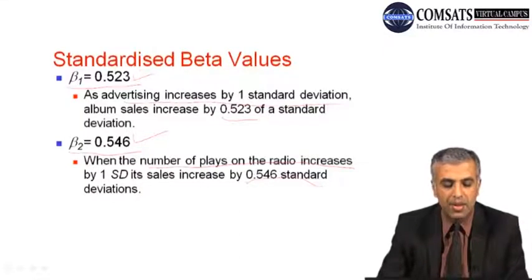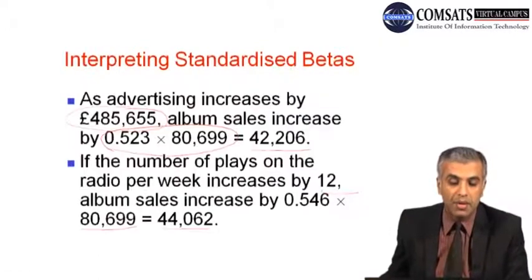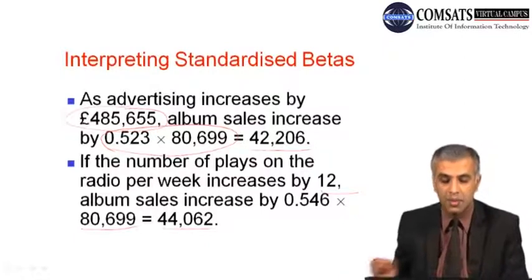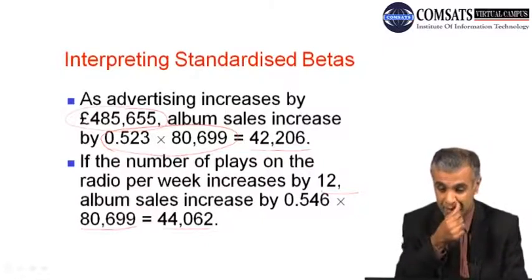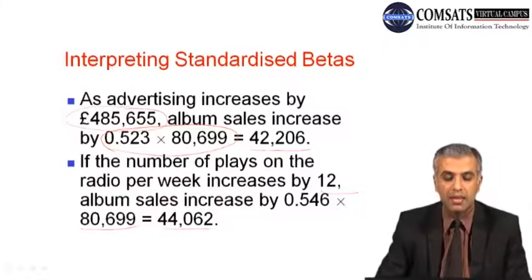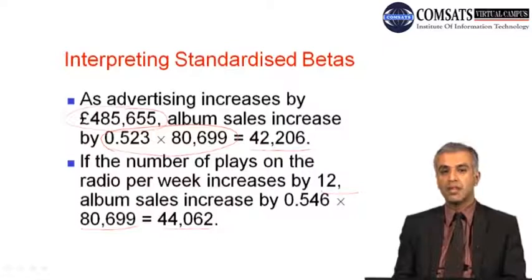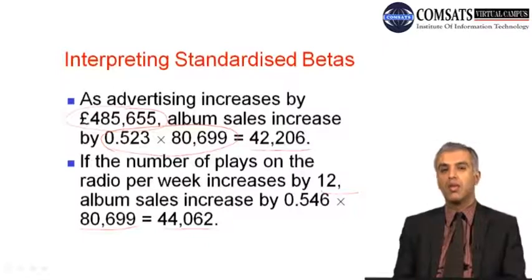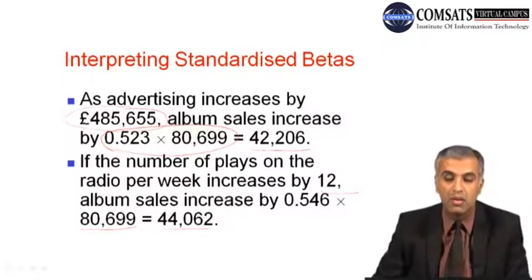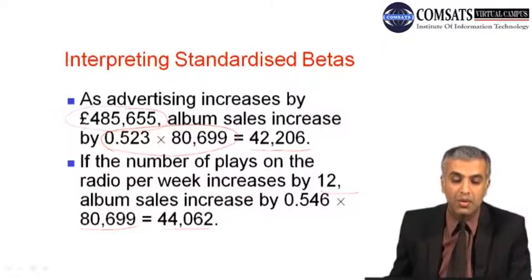In order to predict which value is actually having more impact on the dependent variable, it is important that we standardize these values. Beta 1 is 0.523, meaning that as advertising increases by one standard deviation, sales go up by 0.523 of a standard deviation. We similarly interpreted beta 2, and from there we can now compare easily and predict that beta 2 is greater than beta 1.